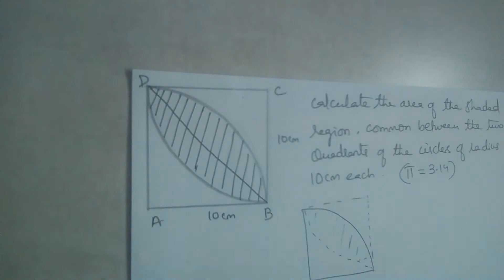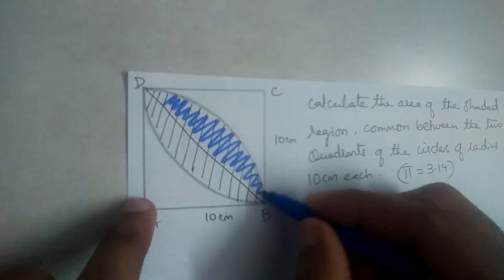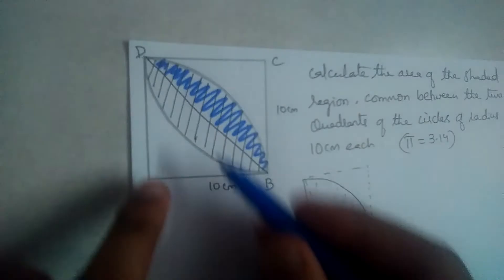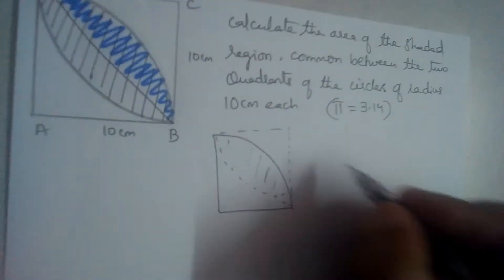So what we'll do is first we'll find the area of this region, which I'm shading with the sketch. Let us find the area of that. How should we find that area?